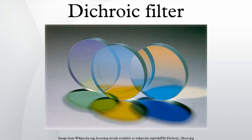Dichroic filters use the principle of thin film interference, and produce colors in the same way as oil films on water. When light strikes an oil film at an angle, some of the light is reflected from the top surface of the oil, and some is reflected from the bottom surface where it is in contact with the water. Because the light reflecting from the bottom travels a slightly longer path, some light wavelengths are reinforced by this delay, while others tend to be cancelled, producing the colors seen.